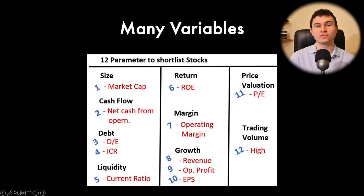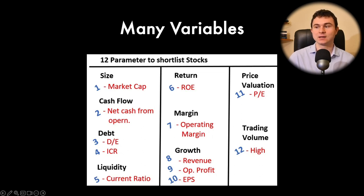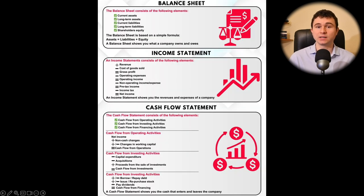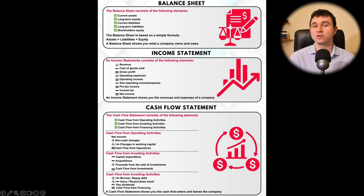When you analyze a stock, there are many variables and it's easy to get lost with specific terms and complex math. We will take it step by step. First, when you analyze a company, you have to look at three things: the balance sheet, the income statement, and the cash flow statement. These three elements will tell you if a business is profitable, if it's healthy, and if it has cash or a lot of debt.